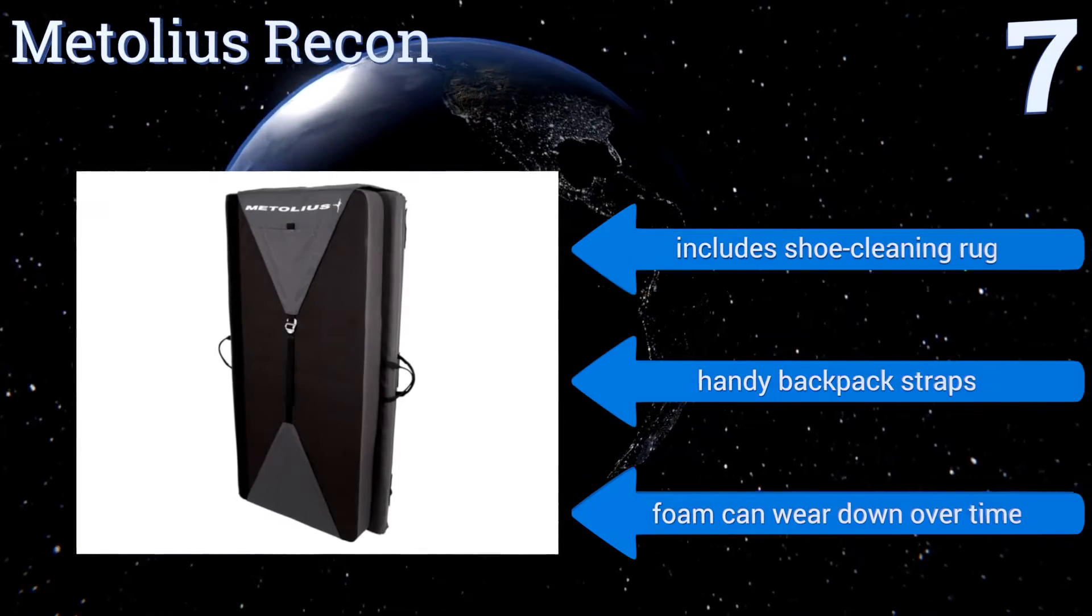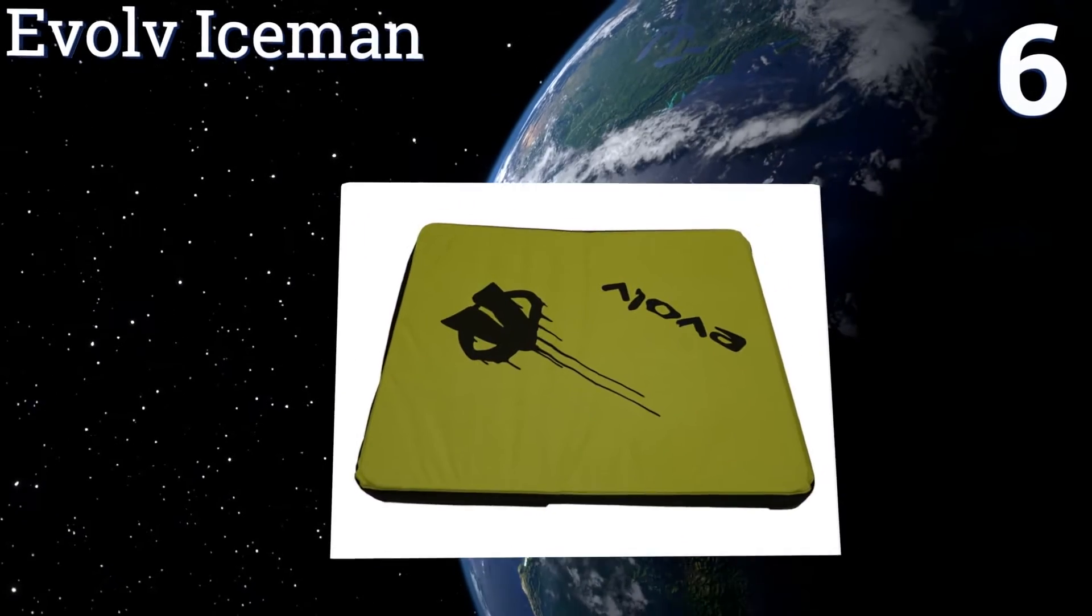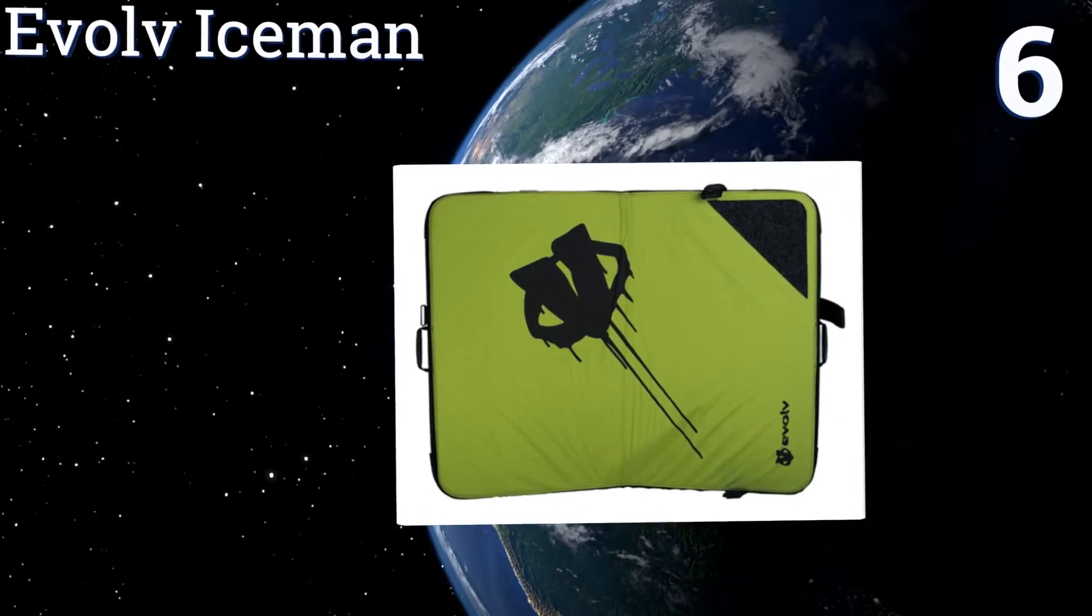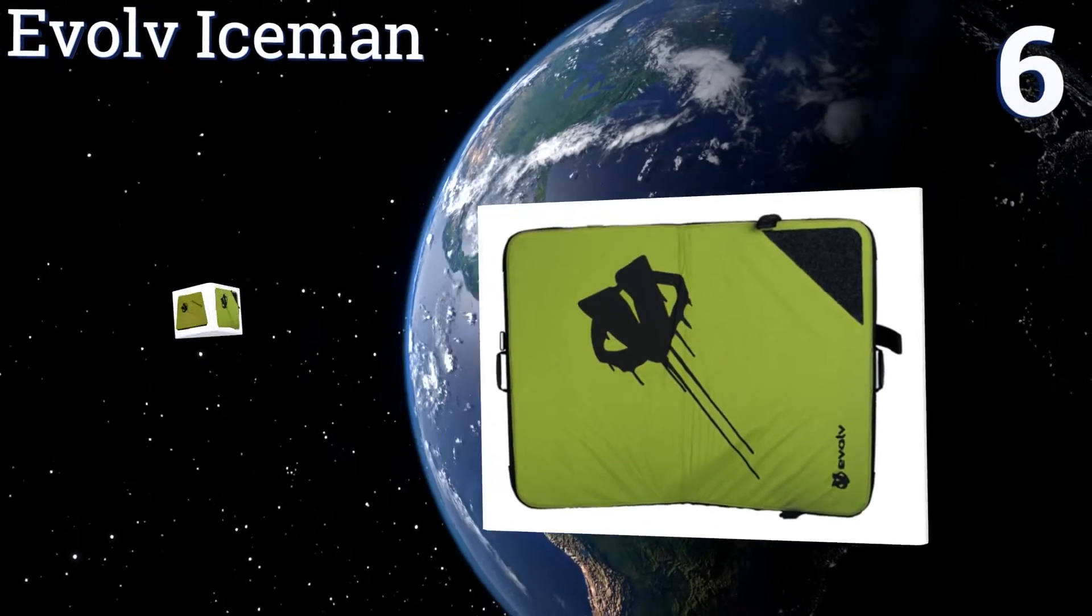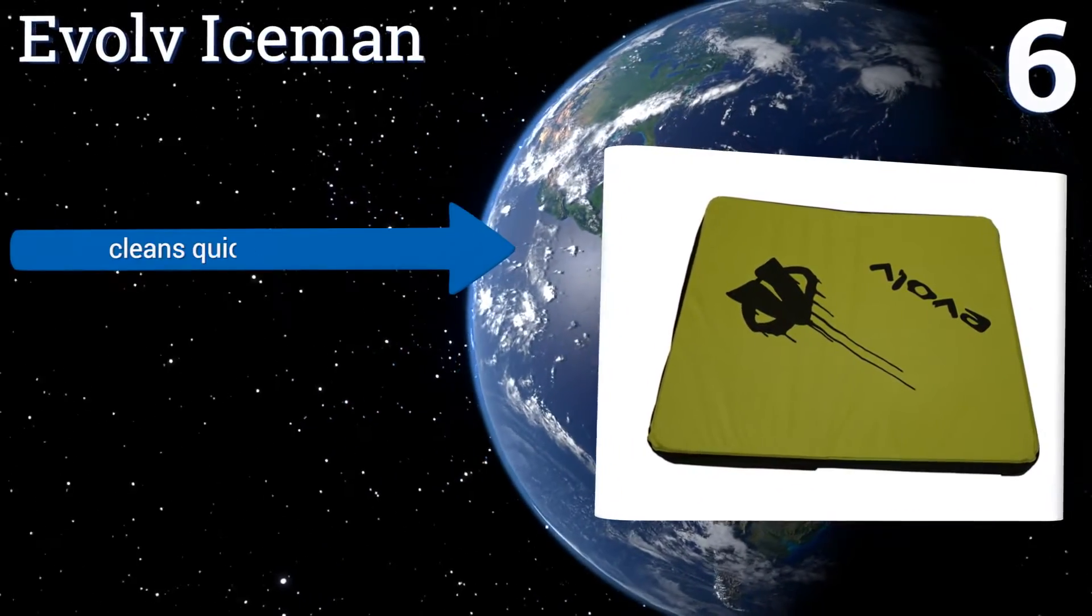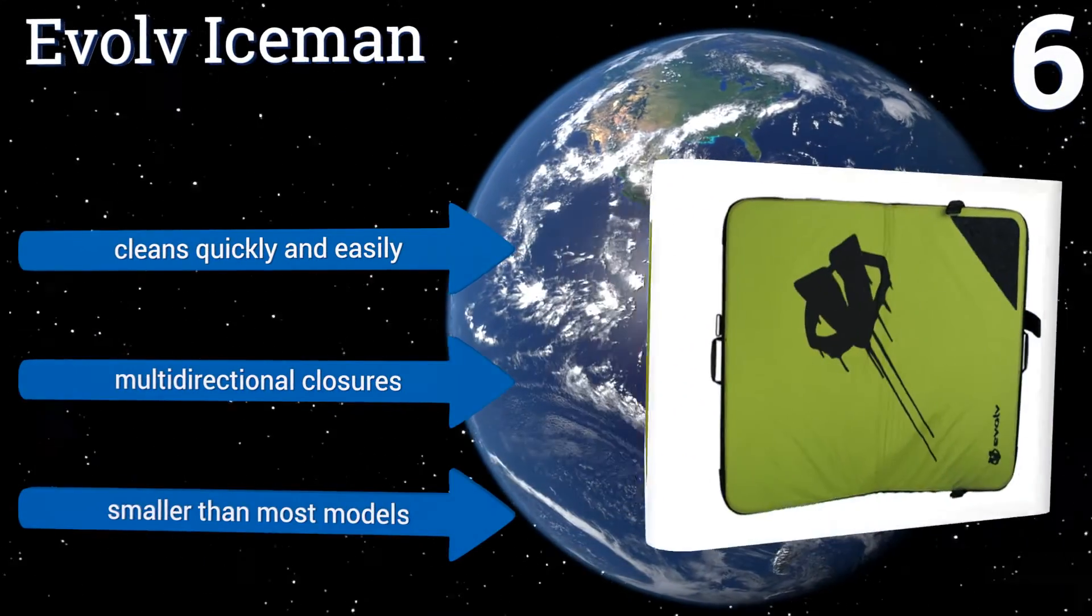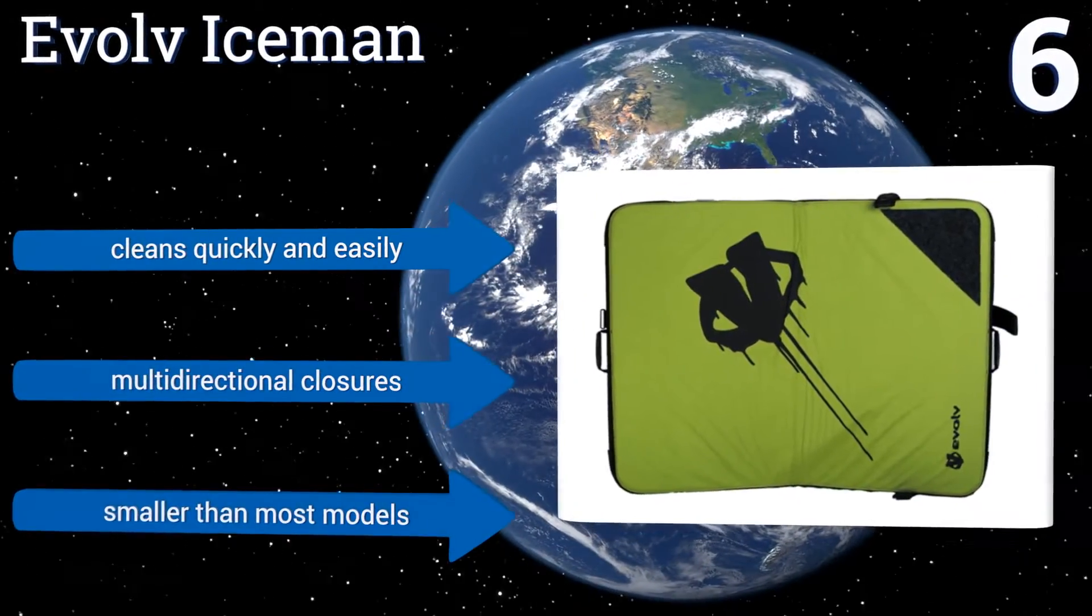At number six, the extra firm padding on the Evolv Iceman is not only ideal for preventing injuries, it adds toughness to an already highly dependable pad. It's held in place by rubberized corners which also protect the mat from deterioration. It cleans quickly and easily and comes with multi-directional closures, however it is smaller than most models.